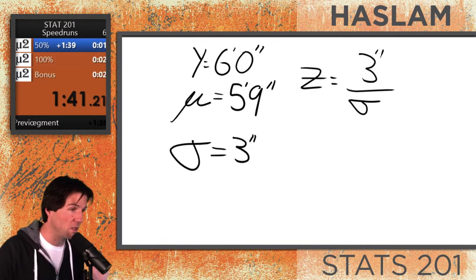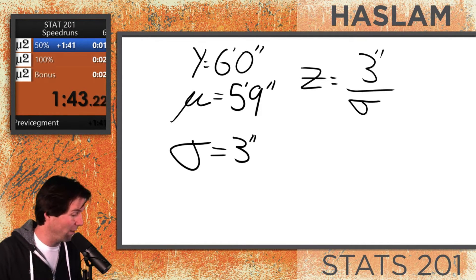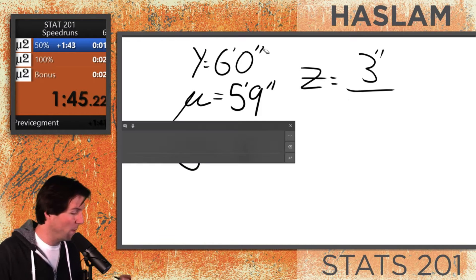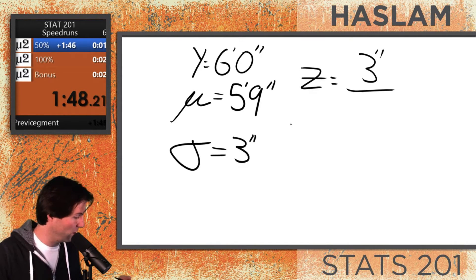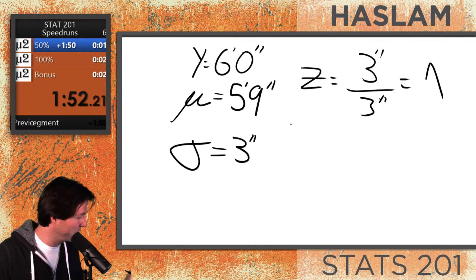Now you'll notice that this person is three inches taller than the average person right here, and that would make them just one standard deviation above the mean. So their z-score is going to be equal to one.